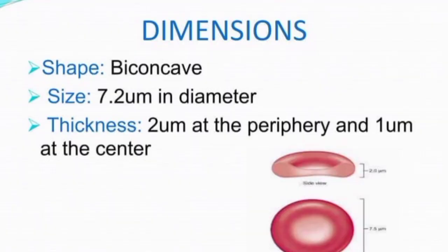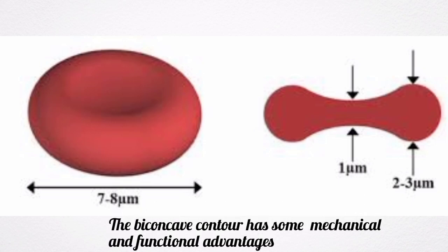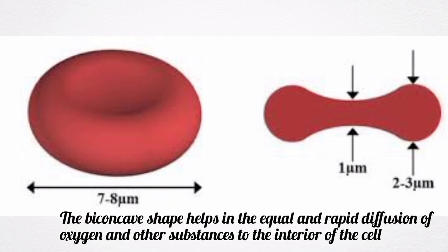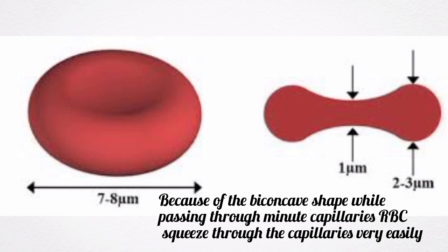The red blood cells are disc-shaped and biconcave. The central portion is thinner and the periphery is thicker. The biconcave contour of the red blood cell has some mechanical and functional advantages. The biconcave shape helps in equal and rapid diffusion of oxygen and other substances to the interior of the cell. Because of the biconcave shape, while passing through minute capillaries, red blood cells squeeze through the capillaries very easily without getting damaged.